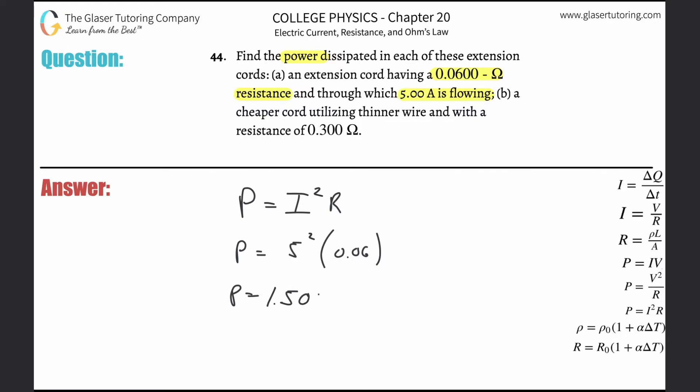Now remember, power is essentially joules per second. This is an energy amount - this is the amount of energy that is being dissipated: 1.5 joules of energy per single second.